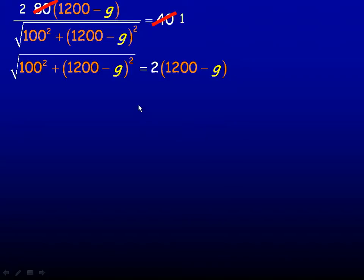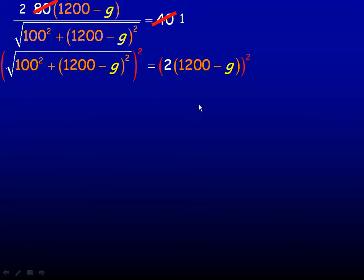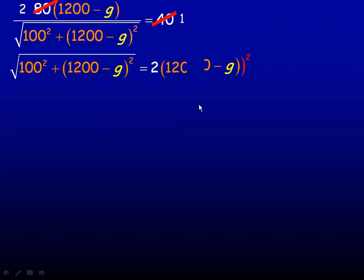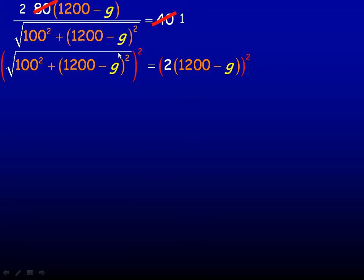And now I want to get rid of this square root. So the way you get rid of a square root when you're solving an equation is to square both sides. So that's what I'm going to do now. So that is both sides squared before and then squared. So if I square the square root, that gets rid of the root on the left here. So we have just 100 squared plus the 1200 minus g squared on the left. And then 2 squared is 4. And then 1200 minus g squared. Now this expression here and this expression here are actually like expressions. We usually call them like terms, but they're not just terms. They're actually a binomial expression.